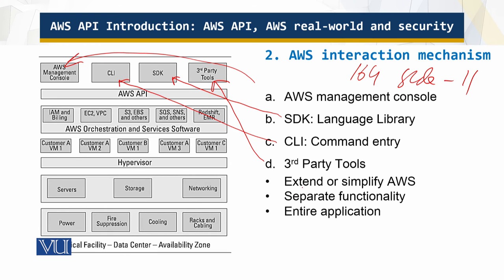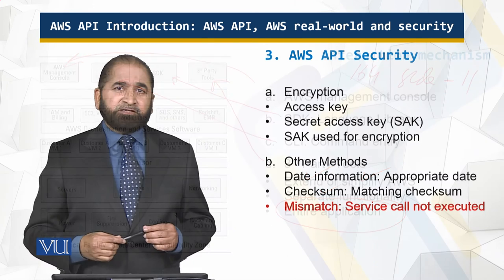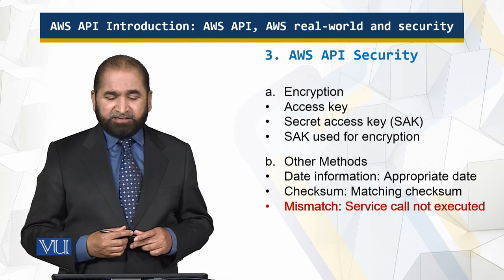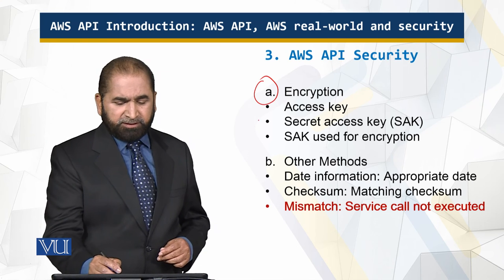There are also third-party tools, which either extend or simplify Amazon Web Services, because it can be difficult and error-prone to directly access AWS using the APIs. These third-party tools extend or simplify functionality, or even create entire applications. Smart and hard-working people have developed all those things. Finally, security is implemented in two ways: encryption and other methods.